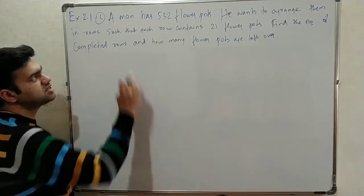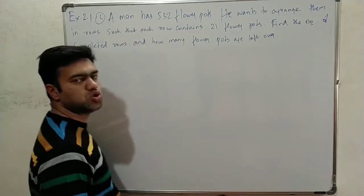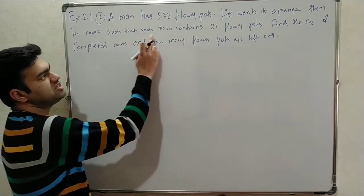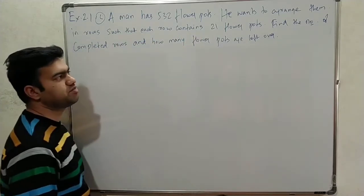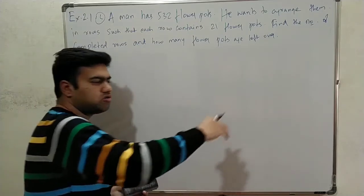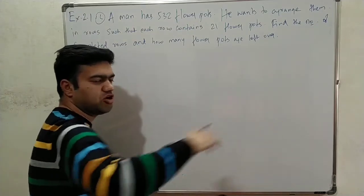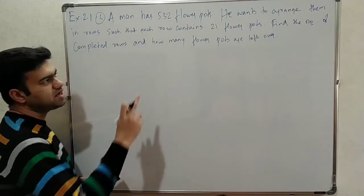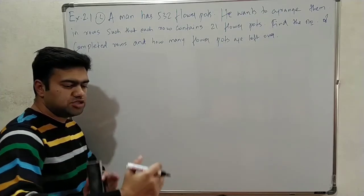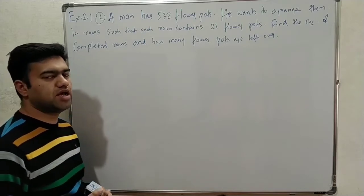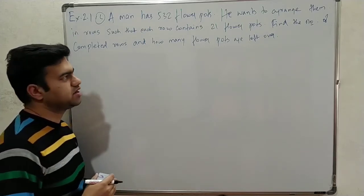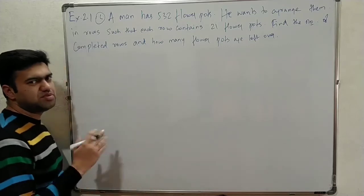Second sum: A man has 532 flower parts. He wants to arrange them in rows such that each row contains 21 flower parts. So there are 532 flower parts and each row has 21. This is a simple division.